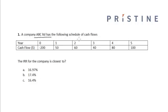A company ABC Limited has the following schedule of cash flows. In year zero it has a cash outflow of $200. In year one it has a cash inflow of $50. In year two it has a cash inflow of $60. In year three it has a cash inflow of $40. In year four it has a cash inflow of $80. In year five it has a cash inflow of $100.